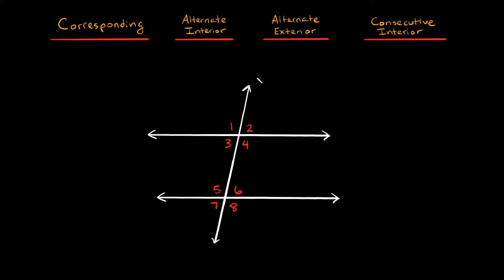Let's break down what those mean. So first of all, when we have two parallel lines right here, we can show that these are parallel lines by drawing little arrows on them. And they're intersected by this line right here called a transversal. So a transversal is just a line that intersects two or more lines at different points.